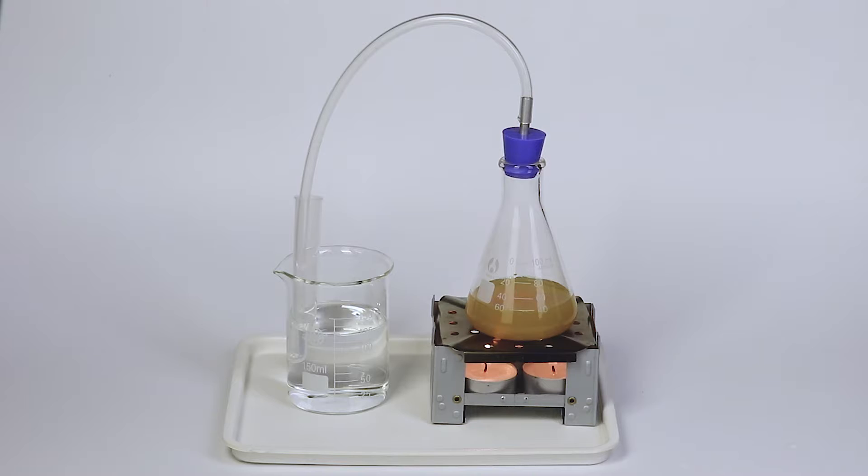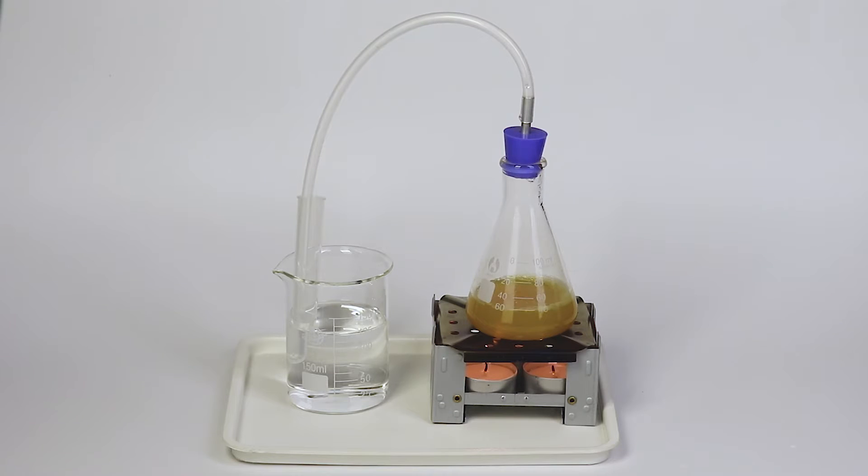Fruit juices contain fragrant substances as well as water. When a fruit juice is heated, these fragrant substances evaporate more quickly than water, with the result that they separate from the fruit juice and flow through the silicon tube into the test tube.